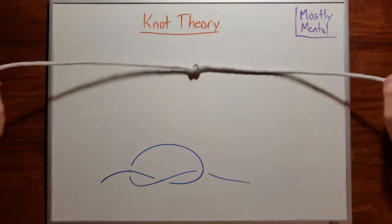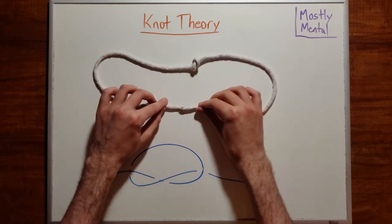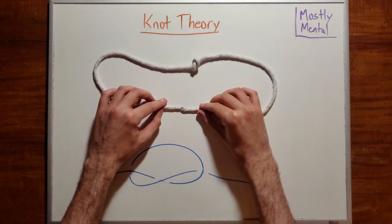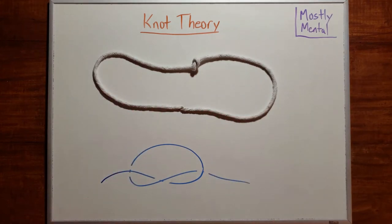But the convention knot theorists have agreed on is to just take the ends of the string and fuse them together to create a single unbroken loop. These approaches all turn out to be equivalent, so we aren't losing anything by picking this one, and it's generally the easiest to work with.